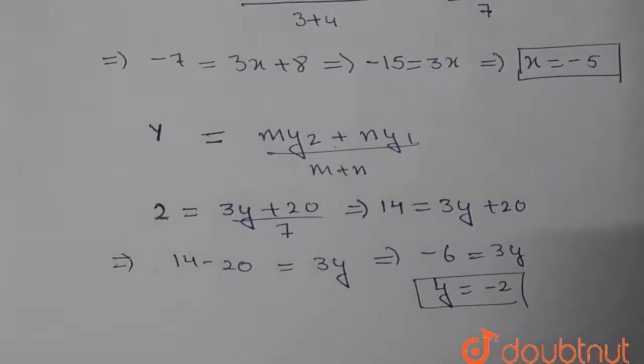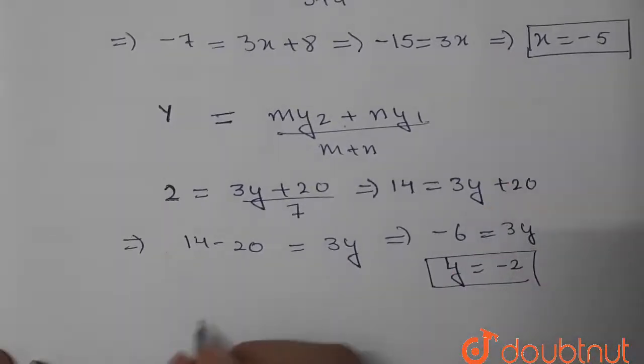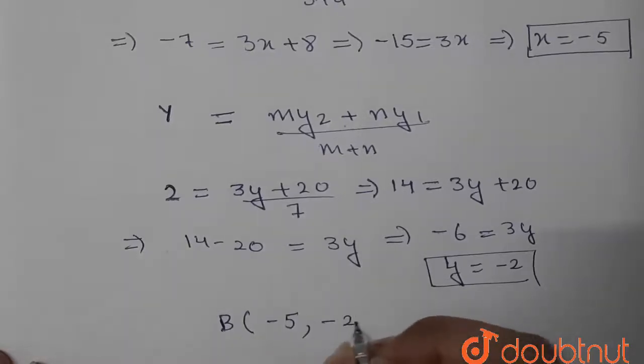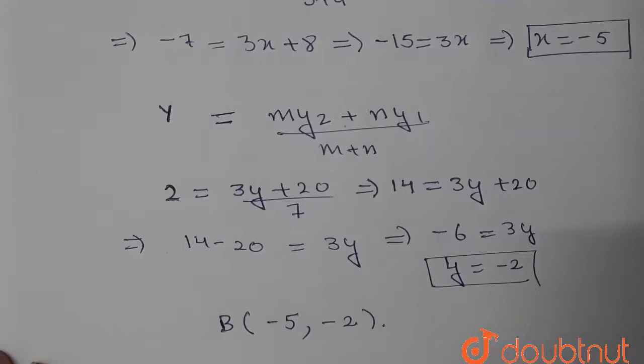We have assumed that the coordinates x and y are the coordinates of B, so the coordinates of B are (-5, -2). This is the required answer. Thank you.